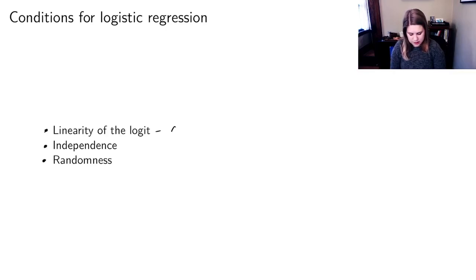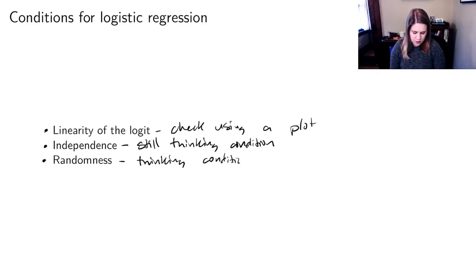We have three conditions which are linearity, independence, and randomness. Linearity is the one that you can check using a plot. Independence is still the thinking condition, and randomness is a thinking condition, so there's more thinking that you need to do for logistic regression.